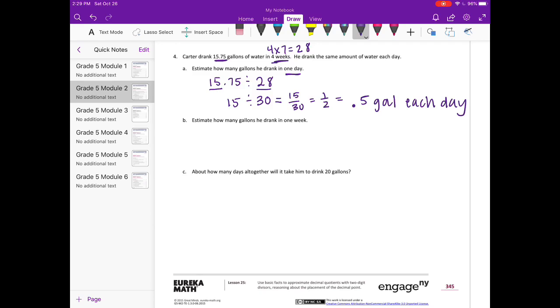How many gallons did he drink in 1 week? If he's drinking half a gallon each day for 7 days, then 0.5 times 7 equals 3.5 gallons.